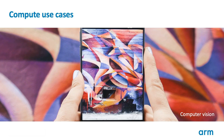Modern GPUs are really general-purpose data plane processors. They are highly efficient at processing large, data-parallel algorithms, so they often find use outside of traditional rendering use cases. One of the most common is computer vision, which is widely gaining traction for augmented reality use cases. These algorithms use the GPU to process incoming imagery, but rather than producing a picture, they output semantic information about the scene — for example, the location and identity of an object found in the image.